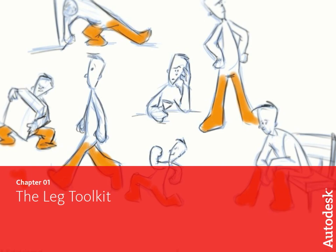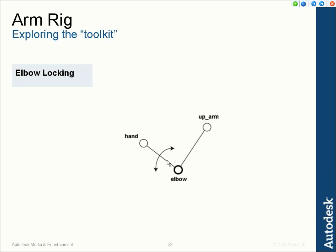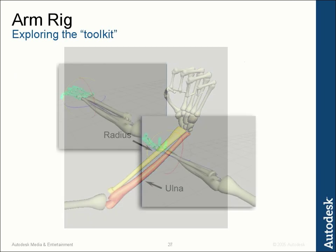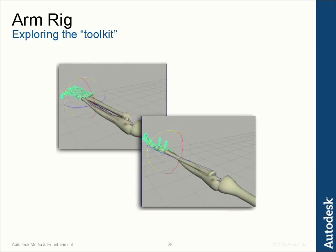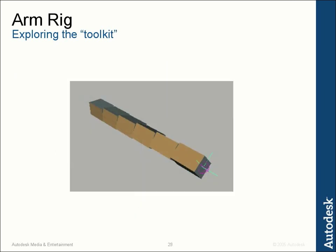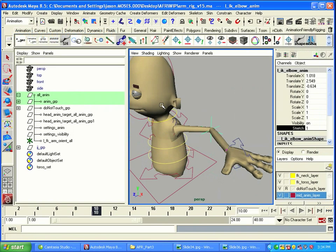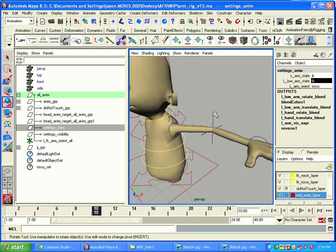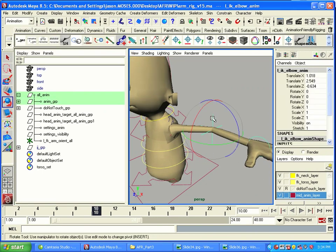In Animator Friendly Rigging Part 3, we began to extend JJ's rig to handle arms and fingers. While doing this, we explored forward and inverse kinematics, set-driven keyframing, expressions, utility nodes, and creating complicated hierarchies in order to get interaction that's easy for the animator to use.